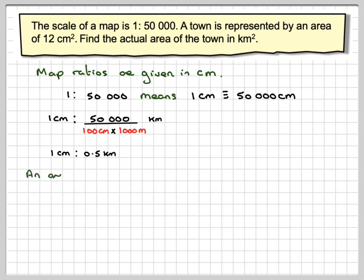Now, one way to do this problem is to draw an area of 12 centimetres squared as a 4 by 3, or you could do 2 by 6 or 1 by 12, and then convert that.